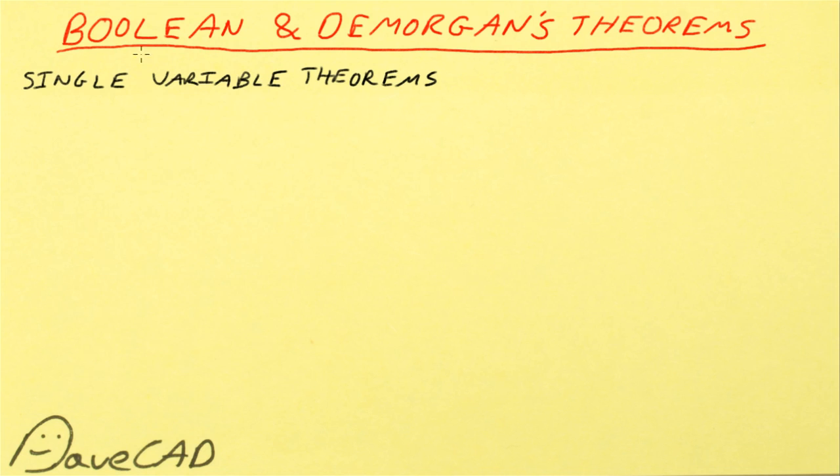So let's take a look at Boolean theorems first. It won't be complex at all, so don't worry about theorems you might think are hard, but these are pretty basic concepts. So there are two types of Boolean theorems, there are single variable theorems and multivariable theorems.